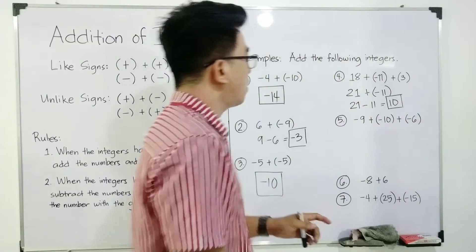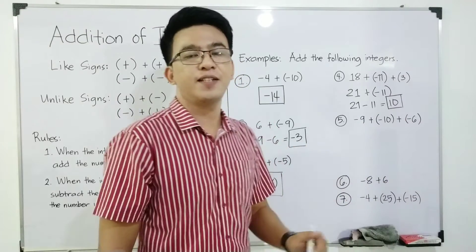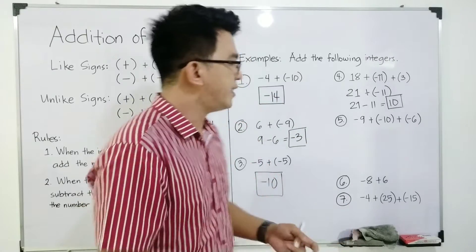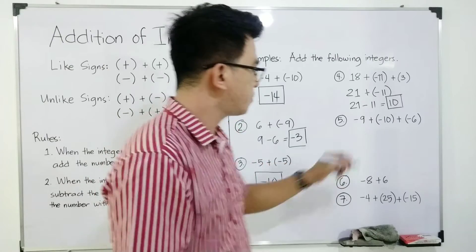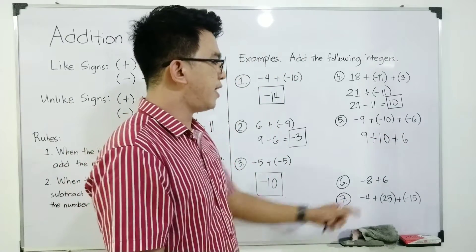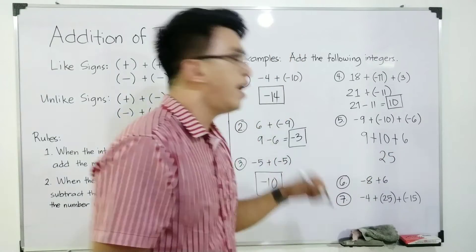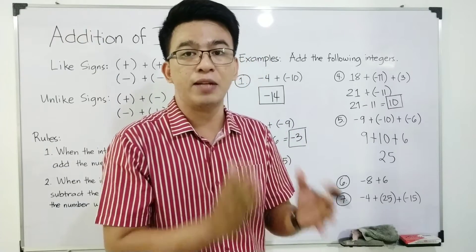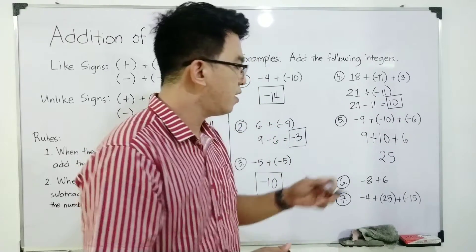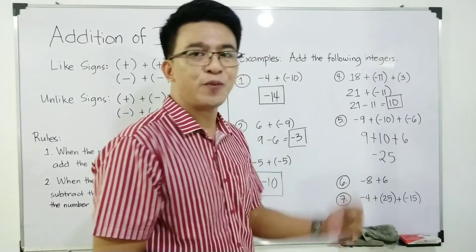Now let's move on with item number 5. We have negative 9 plus negative 10 plus negative 6. All of them have the same signs. So I will add the numbers: 9 plus 10 plus 6. 9 plus 10 is 19, plus 6 — your answer is 25. And based on the rule, copy the common sign of the integers. Since all of them have the negative signs, I will put a negative sign here. My answer is negative 25.